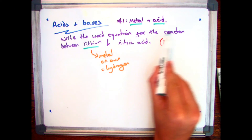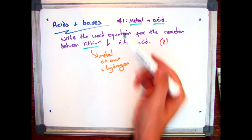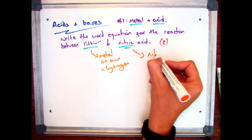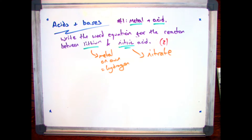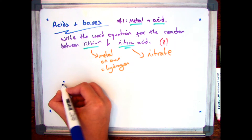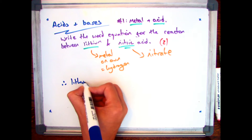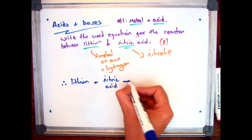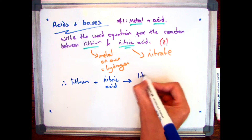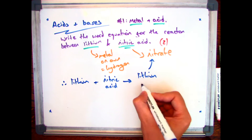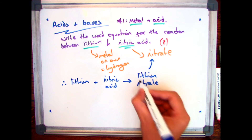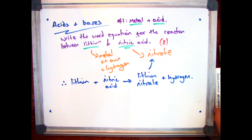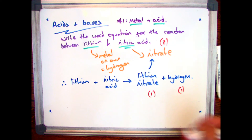Let's look at another example. This time we're reacting lithium and nitric acid. I've still got my metal on its own, so I'm still going to get hydrogen as a by-product, but this time I've got a different acid. If you have nitric acid, the key is you will always have a nitrate. So lithium plus nitric acid gives us lithium nitrate and hydrogen. I'll get one mark for lithium nitrate and one mark for hydrogen.